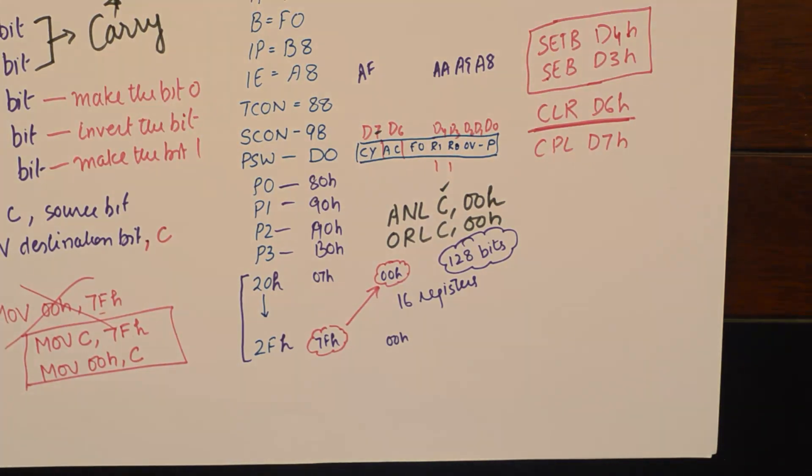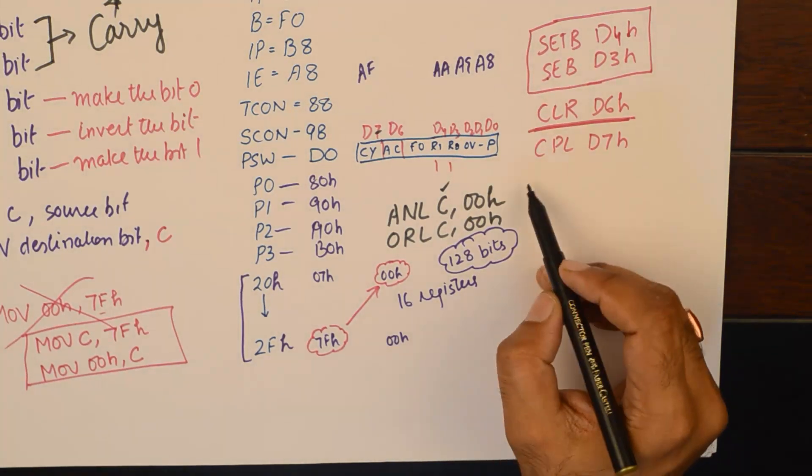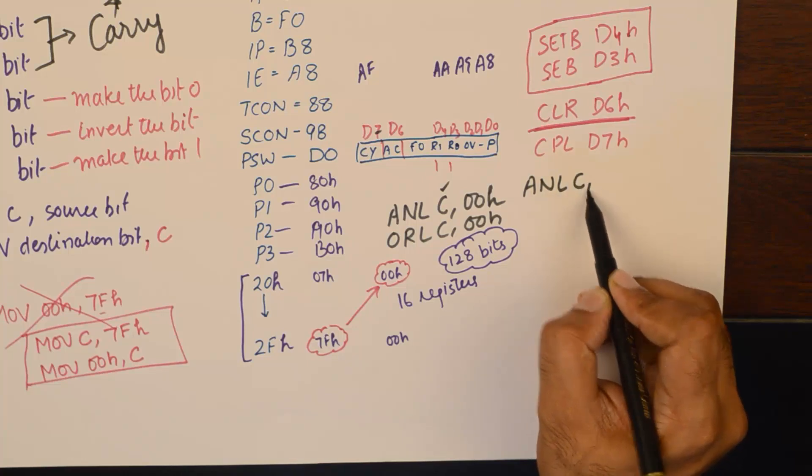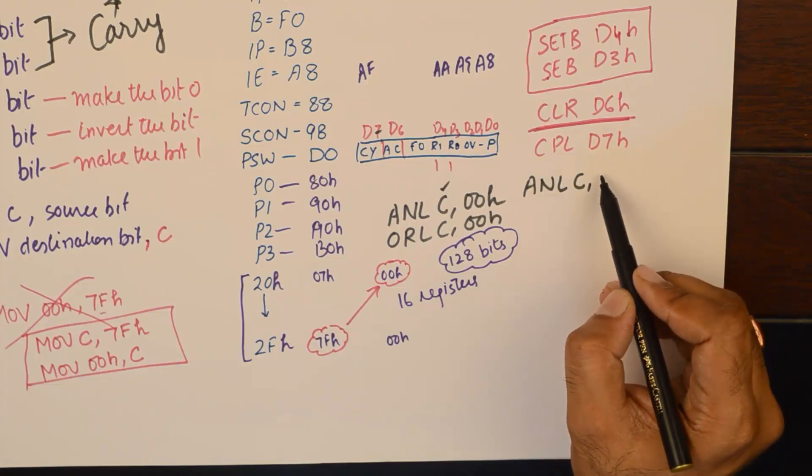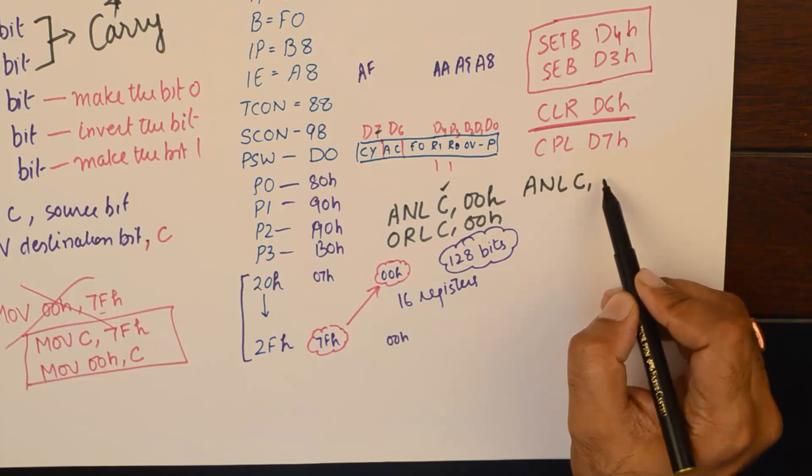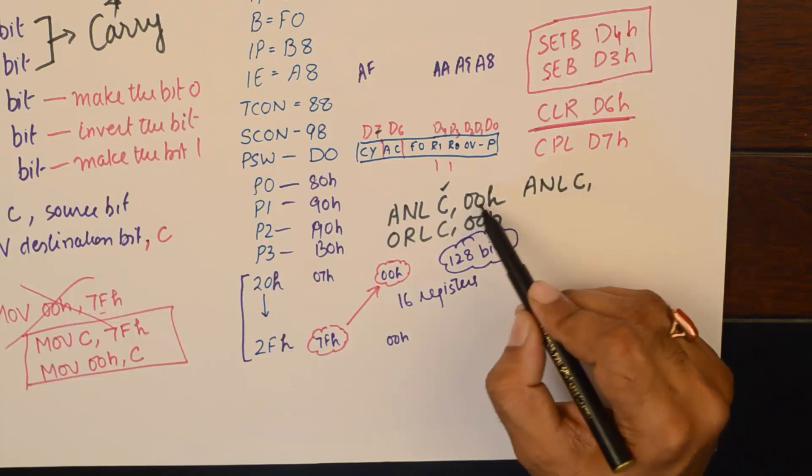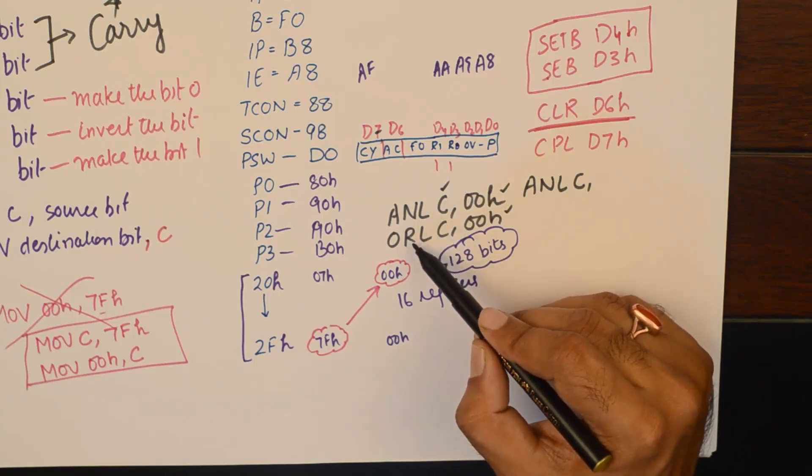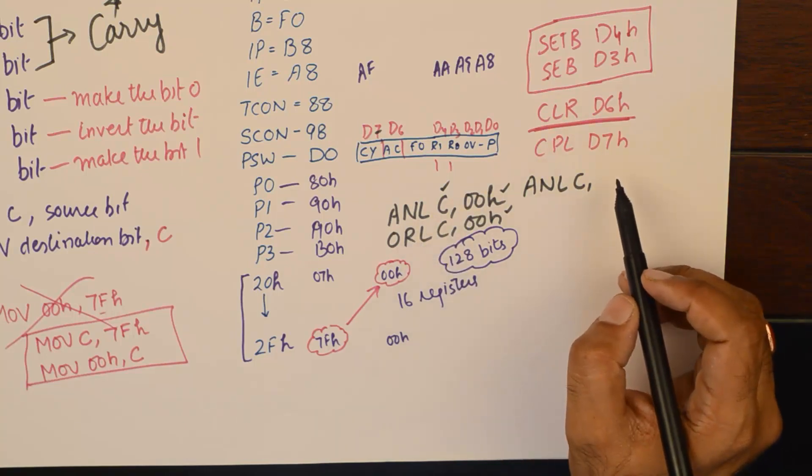So logical AND operation and logical OR operation will happen only with C as the destination bit. And there is one more operator. If you want to logically AND the contents of some register, you could use these two commands for logical AND and logical OR.